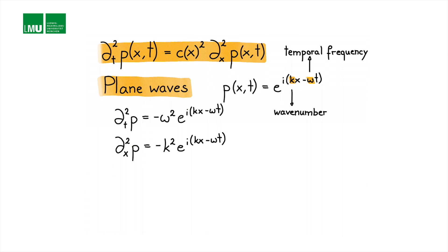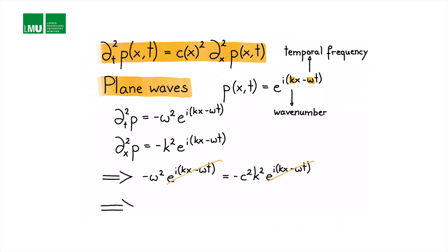Substituting these analytical derivatives into the wave equation, the left-hand side gives minus omega squared and the right-hand side gives c squared times k squared, both multiplied by the exponential term. Since the exponential term is always positive, we cancel it and are left with c equals omega over k, the well-known dispersion relation relating temporal frequency to wave number.